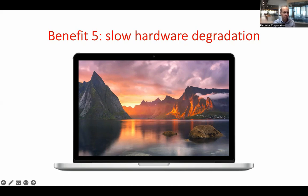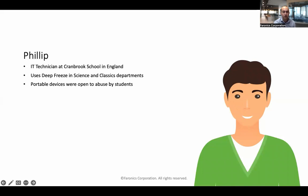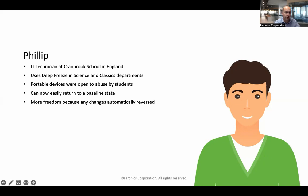Now I'm going to run through some real-life use cases — real people who work at real Phoronics customers. Starting with Philip, IT technician at Cranbrook School in England. He uses Deep Freeze in his science and classics departments. He found that portable devices were open to abuse by students, but now he can really easily return those devices to a baseline state. If students make changes Philip doesn't want, he can just return them to baseline — so he can give students more freedom because any changes are automatically reversed, allowing non-restrictive learning without strict controls.